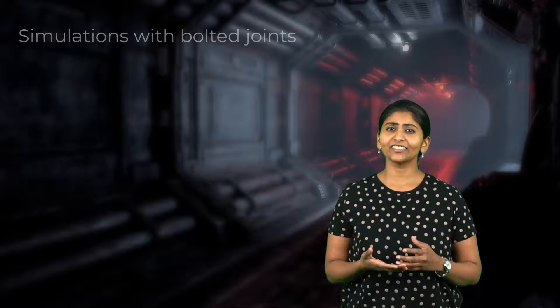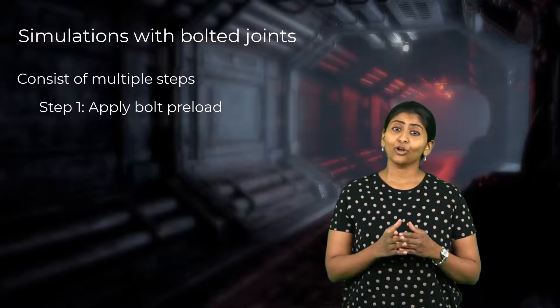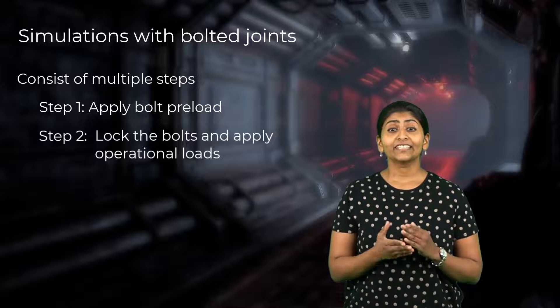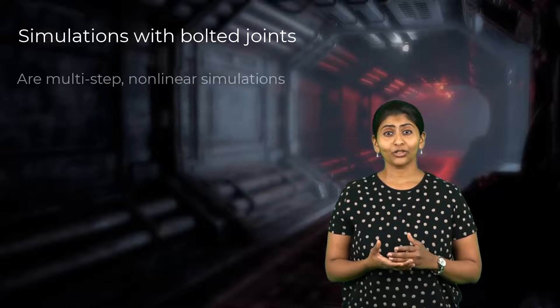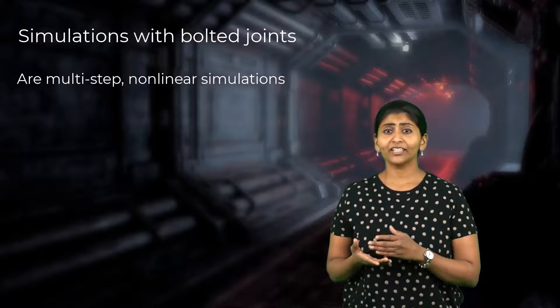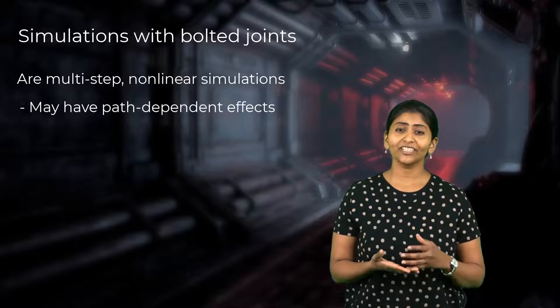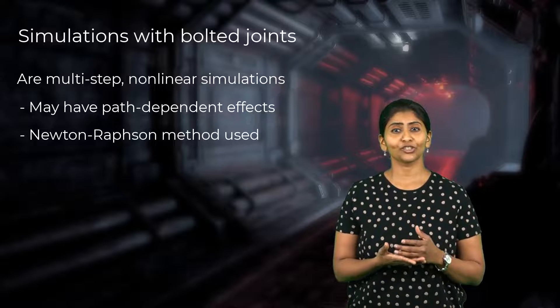Since simulations involving bolted joints mimic the assembly process first, such simulations generally consist of multiple steps. Typically, we apply bolt preload in the first step and then lock the bolts in the subsequent steps. Applying bolt preload and operational loads in the same step will lead to incorrect results. Simulations involving bolted joints are typically multi-step, non-linear simulations. There may be path-dependent effects such as friction or metal plasticity, and the order of the loads may affect the final results. Thus, the Newton-Raphson method is often used for solving such non-linear problems.